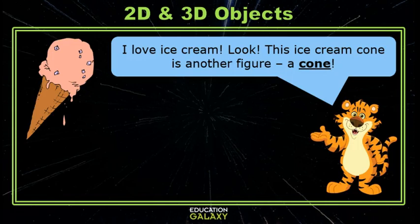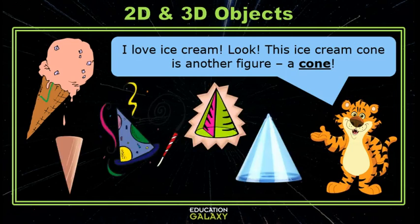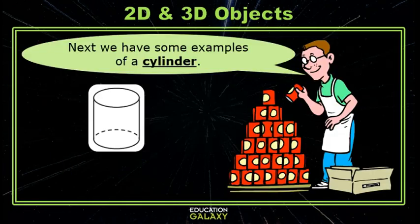I love ice cream. This ice cream cone is another figure, a cone. Here are some other cones. Notice that a cone has one base, which is a circle, and the other side comes to a point or a vertex.